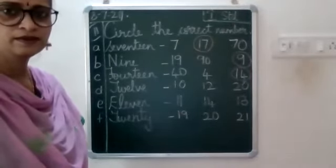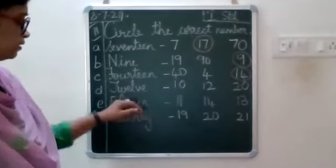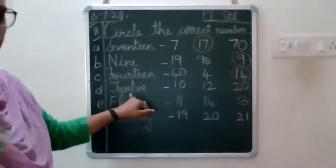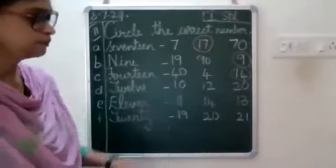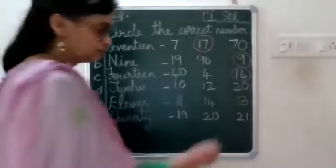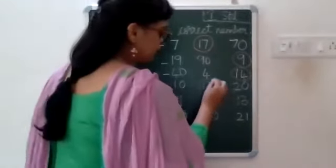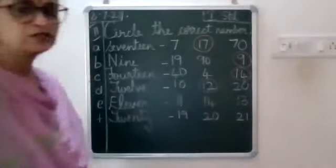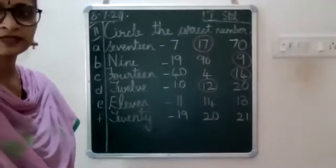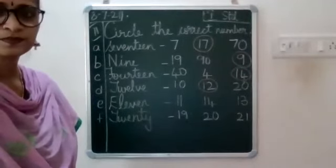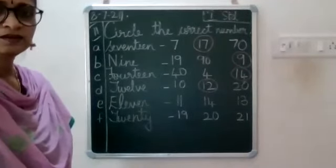Next one — 12, where does 12 come? Second one, 12. Yes — 1, 2, 12. Circle 12.